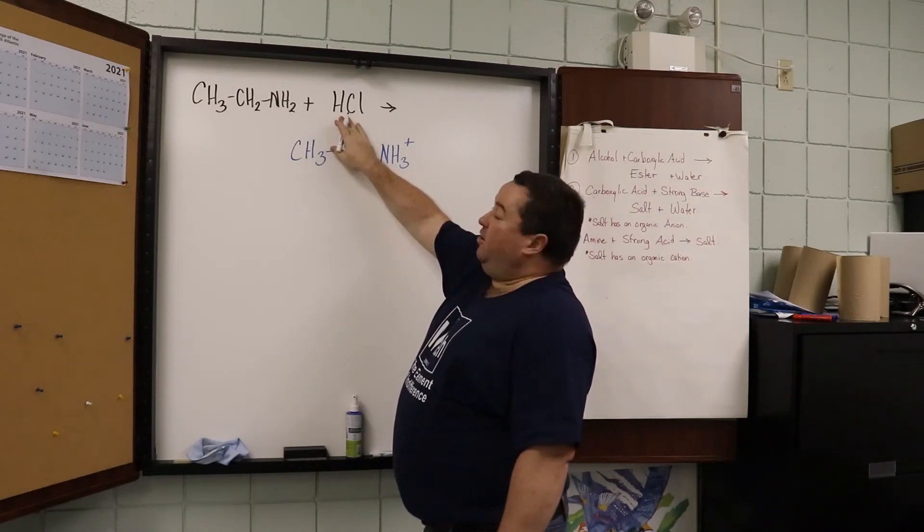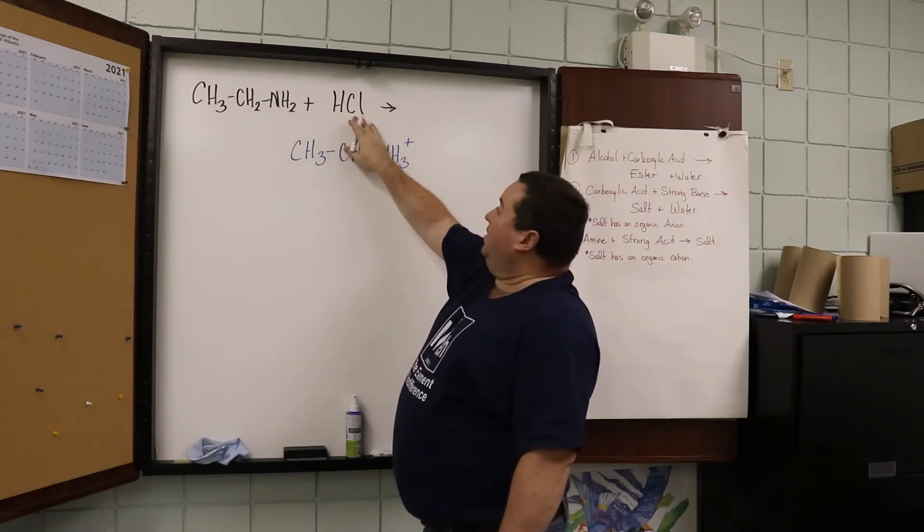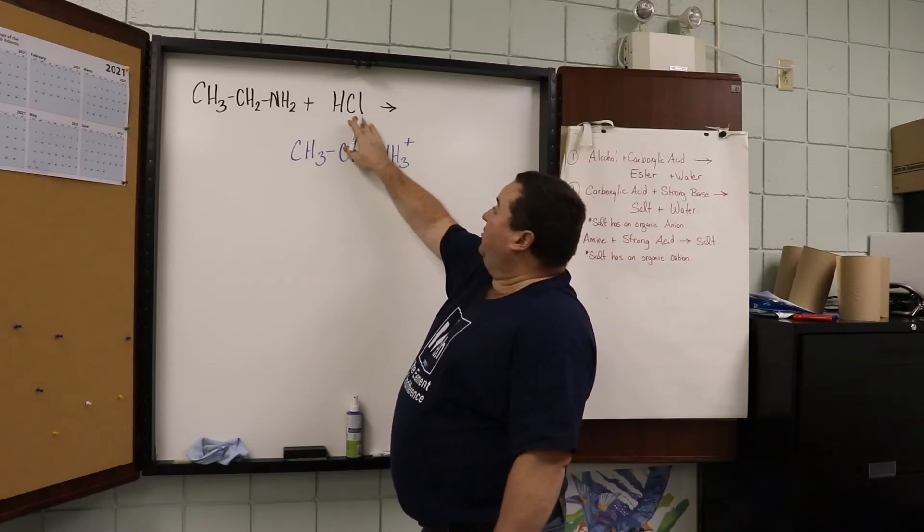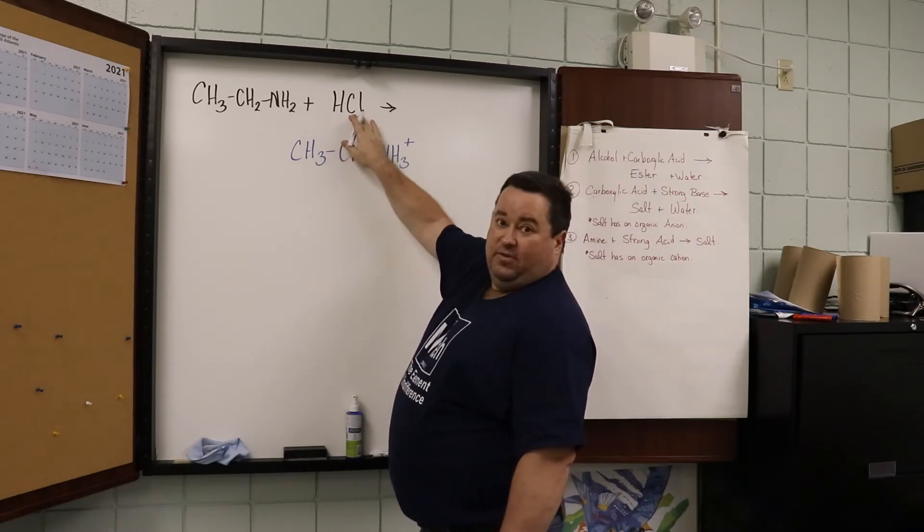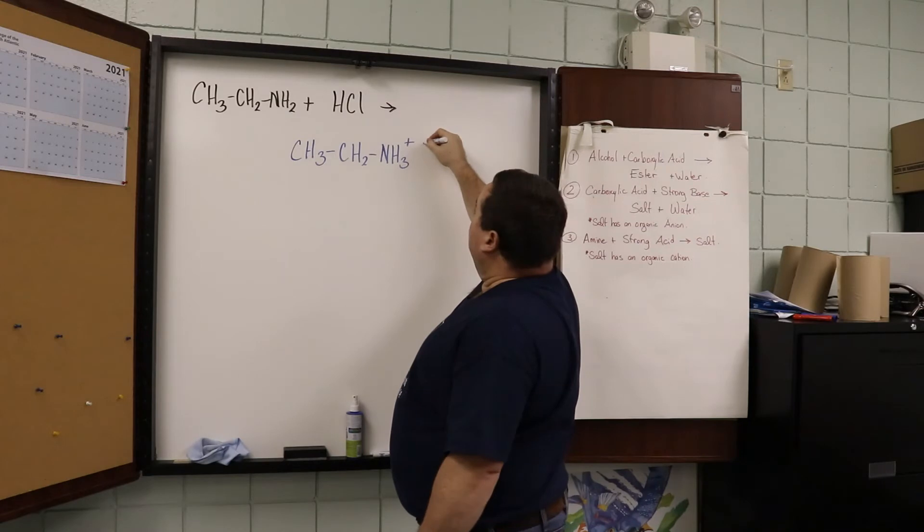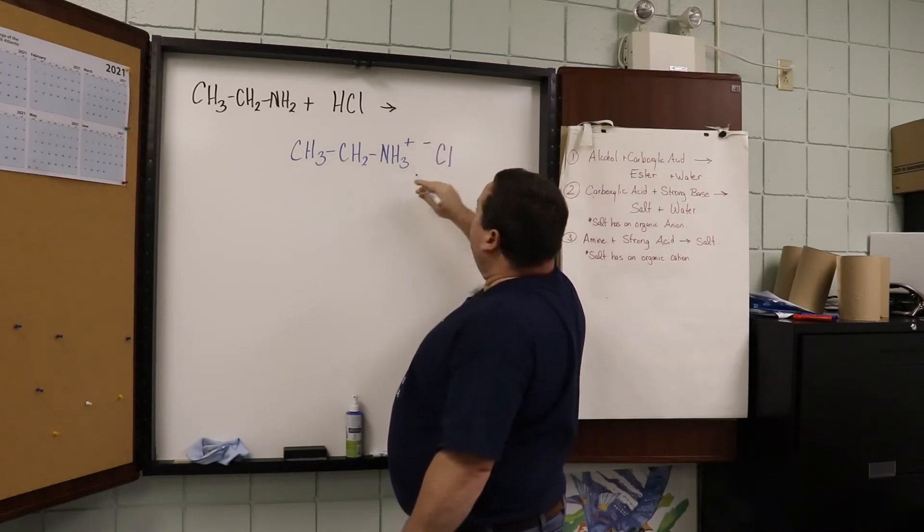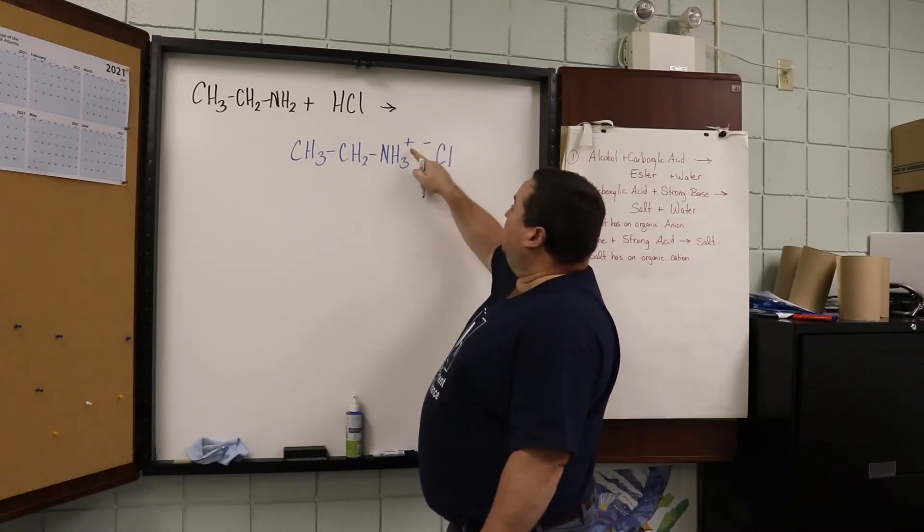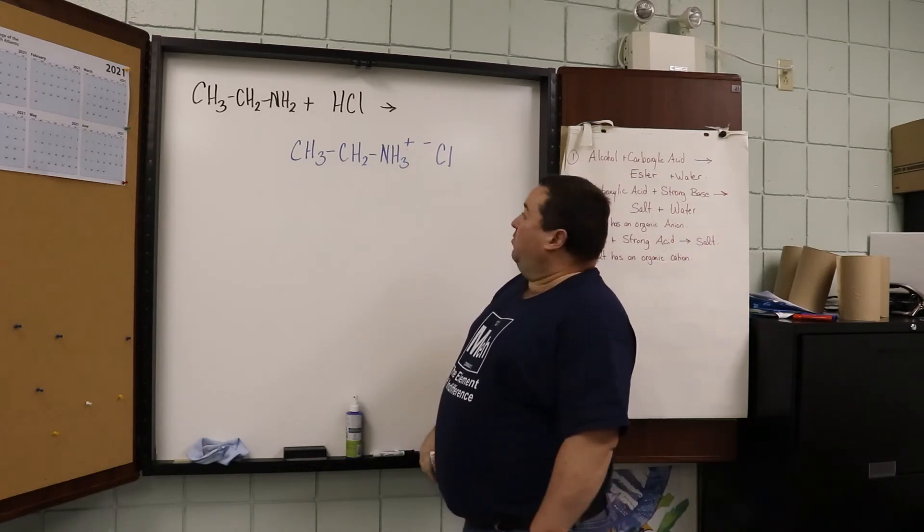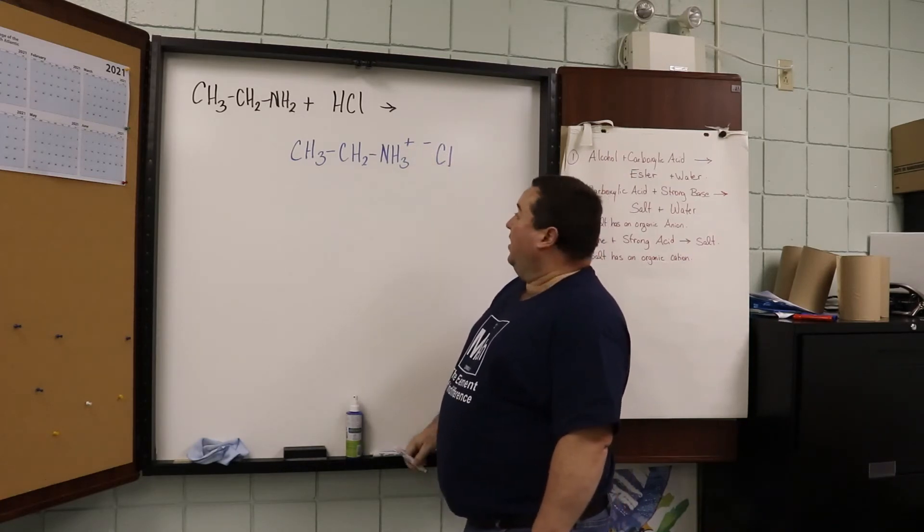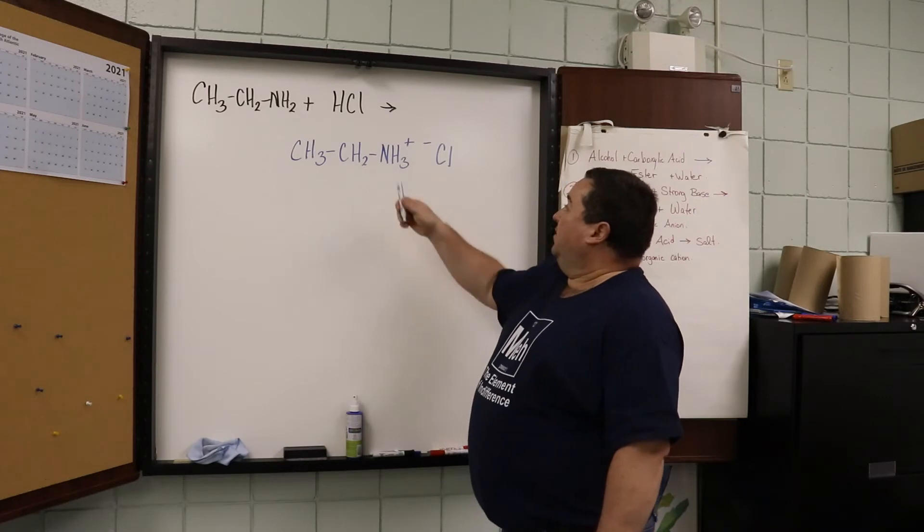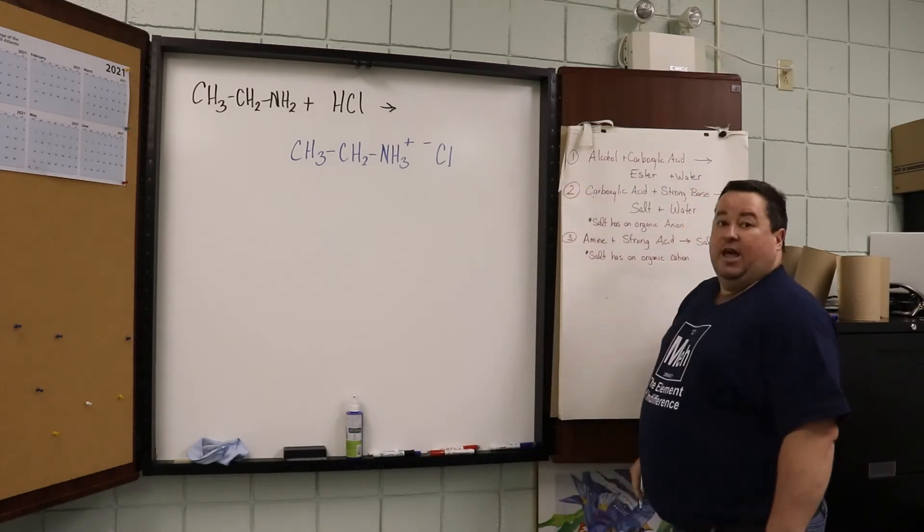Because the hydrogen carried a positive charge, when the HCl ionizes, we have H positive and Cl negative. This is an ionic compound. The ionic bond is shown as the attraction between the positive and the negative ion. And this time, the cation is the organic piece.